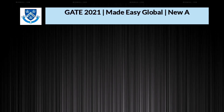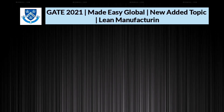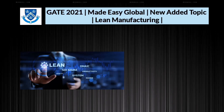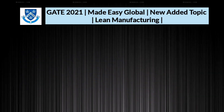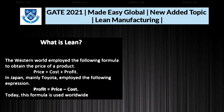Hello everyone, welcome to mydcglobal. Today we are discussing lean manufacturing, which is a newly added topic in the GATE examination 2021. The topics include the 5S technique, Kaizen, pull manufacturing, mistake proofing, quick changeover, six sigma, and the Theory of Constraints. Let's see them one by one.